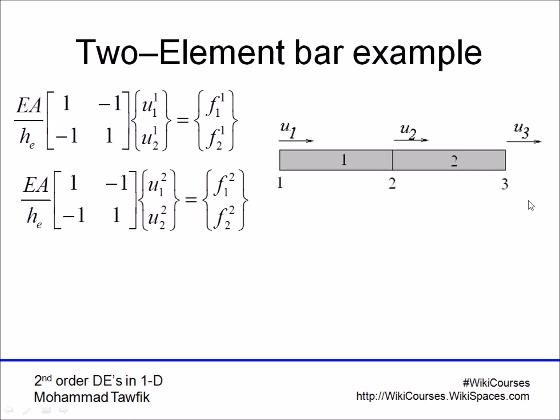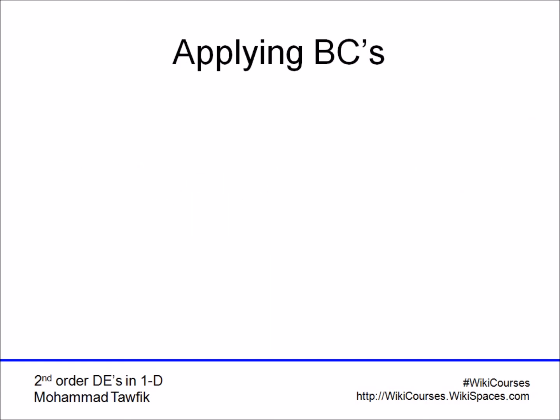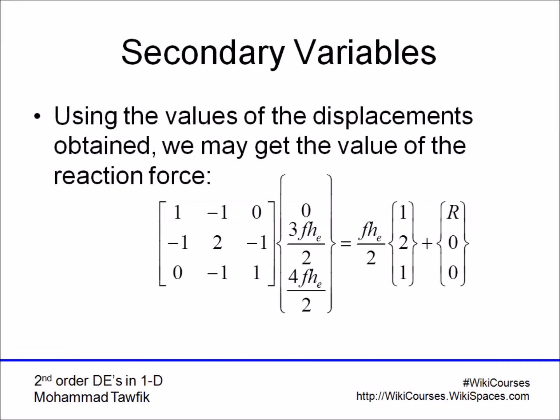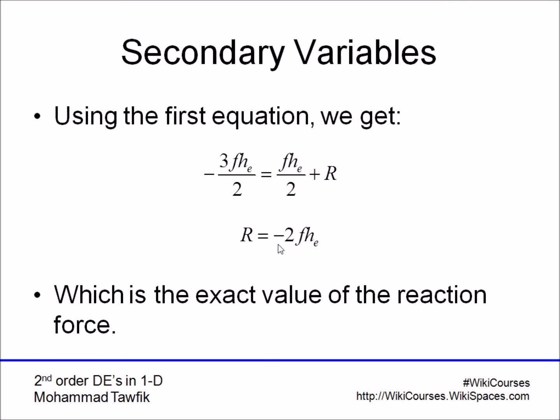What are we left with? We're left with knowing the reaction term. I set aside the first equation, so let's go back to calculate what's known in finite element jargon as the secondary variable. Here, the secondary variable is the reaction force at the support of the bar. Just use the first equation; everything is known. You know u1, u2, and u3, so substitute directly and solve for the reaction, which will be -2F times H.